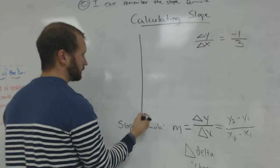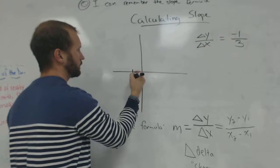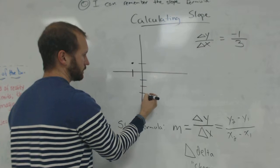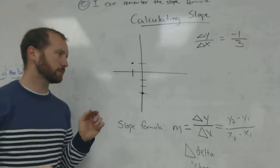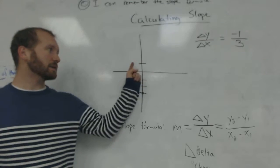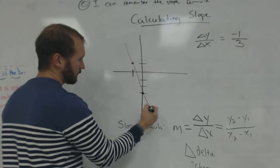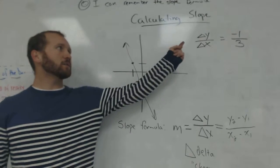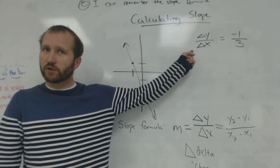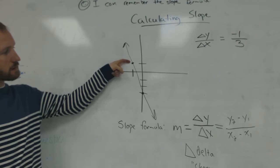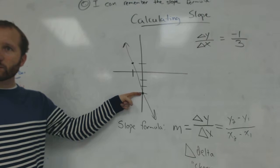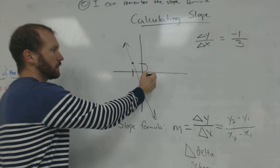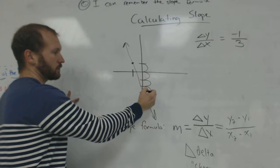What about this one? There's our first point. And here's our second point. I'm going to ask you the same question. What is the slope? I better draw a line first. What is the slope of this line? In other words, what is the change in y and what is the change in x?